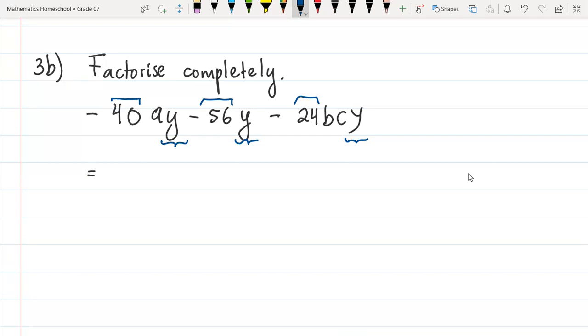There are certain methods to find the highest possible factor, common factor, that's what we have learned in the primary school. Let's see. So what is the HCF of 40, 56, and 24?